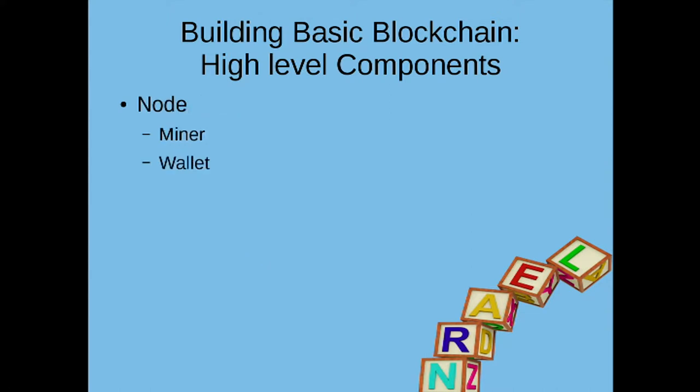Nodes: we're speaking mainly of miners and wallets. As a consumer you'll have a wallet node. If you're trying to mine coins, you'll have a bunch of GPUs or ASICs or whatever you're mining with. Those all have their own sets of public and private keys, which is another important part of cryptography. If you understand SSL or SSH keys, you have some familiarity with asymmetric cryptography.